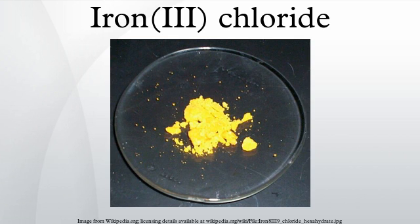Iron chloride also reacts with other chloride salts to give the yellow tetrahedral FeCl4- ion. Salts of the FeCl4- ion in hydrochloric acid can be extracted into diethyl ether. Alkali metal alkoxides react to give metal alkoxide complexes of varying complexity; the compounds can be dimeric or trimeric.